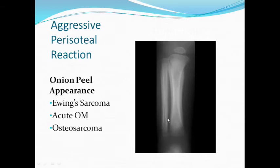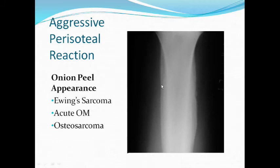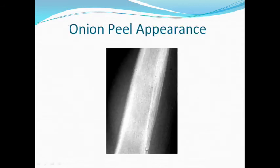Another type of aggressive periosteal reaction is the onion-peel or lamellated appearance. The bone tumour grows very fast and repeatedly lifts the periosteum; each time the tumour grows, the periosteum lays down a new layer of bone, giving multiple layers like the peels of an onion. This lamellated form is a classic finding of Ewing's sarcoma but can also be seen in acute osteomyelitis or osteosarcoma. A classic X-ray demonstrates multiple layers of lamellar new bone formation as the tumour repeatedly lifts the periosteum.